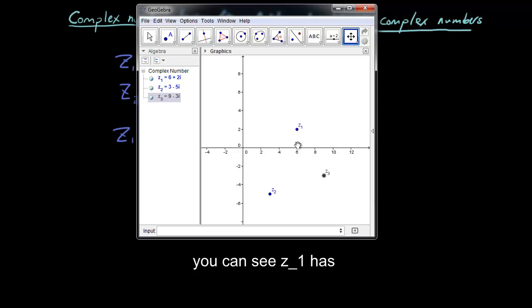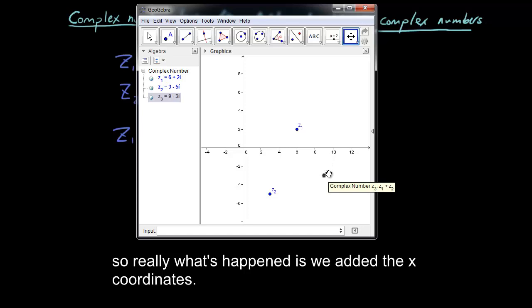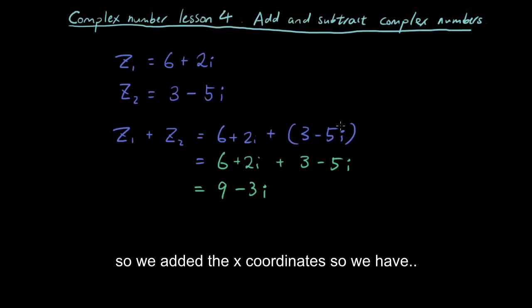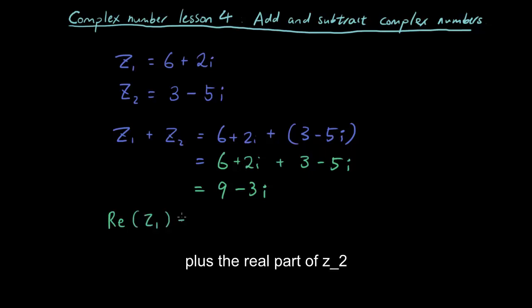Well you can see z1 has an x-coordinate of 6. And z2 has an x-coordinate of 3. So really what's happened is we added the x-coordinates. So we have the real part of z1 plus the real part of z2, which is 6 plus 3, which is 9.